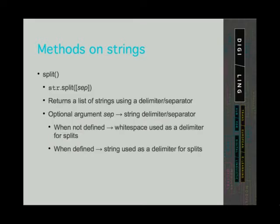The next method is the split method. This method returns a list — not a string — but a list of strings using a delimiter or separator. The separator is an optional argument. When it is not defined, it uses white space as a delimiter. When it is defined, it uses the defined characters as delimiters. It also takes one more optional argument which we are not going to mention here; you can look this up in the Python documentation.